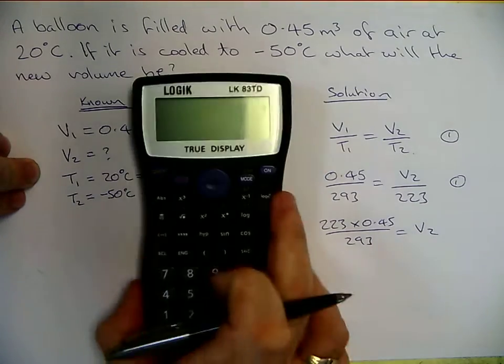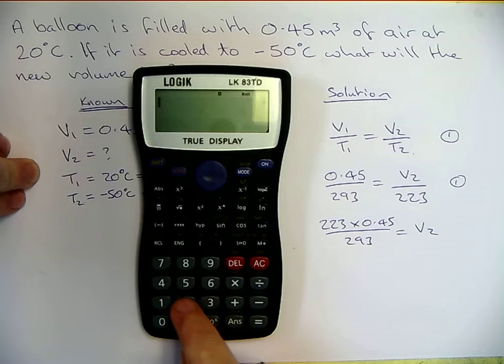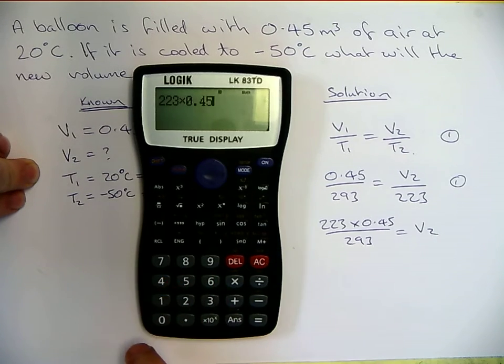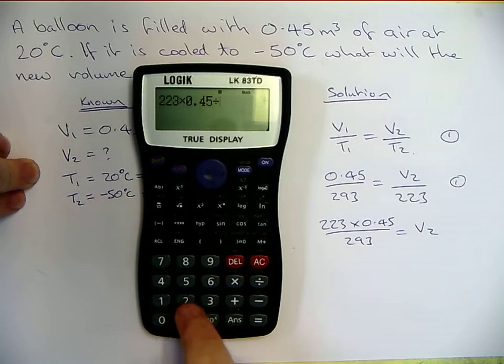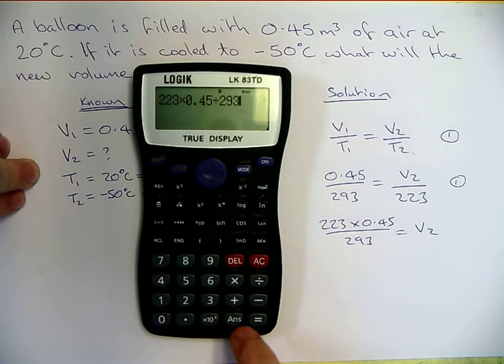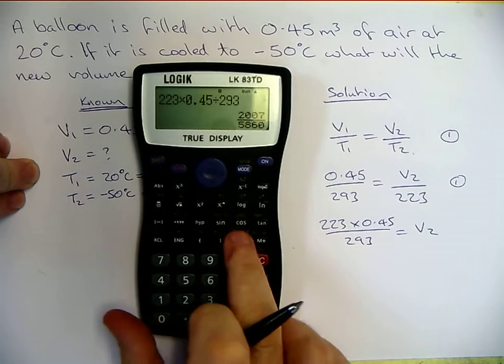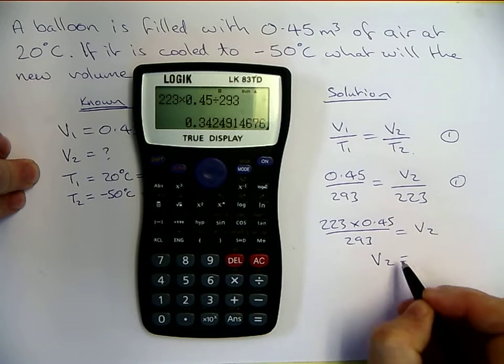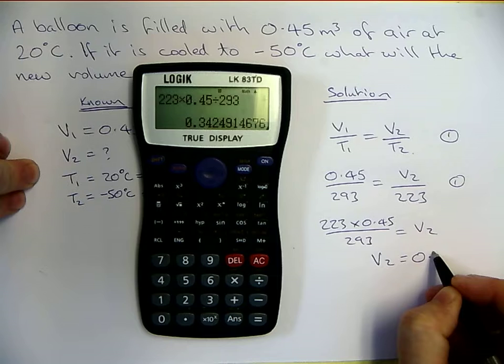And this is where we need a calculator. So 223 times 0.45 divided by 293. And that gives us V2 equals 0.34.